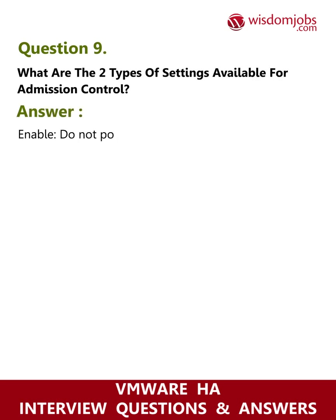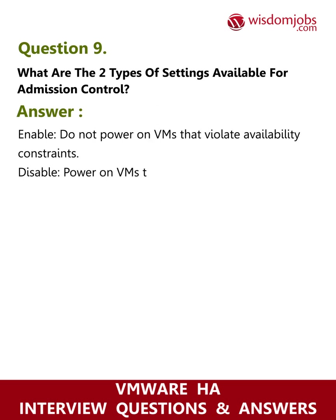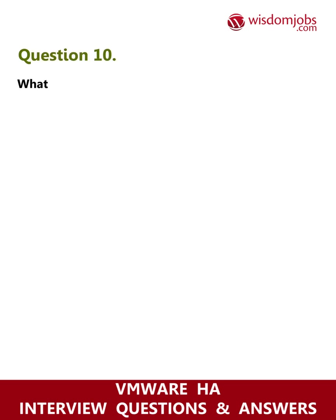Question 9: What are the two types of settings available for admission control? Answer: 1) Enable — do not power on VMs that violate availability constraints. 2) Disable — power on VMs that violate availability constraints.